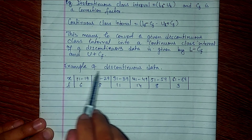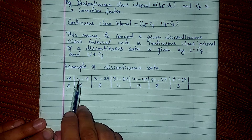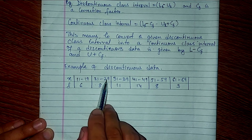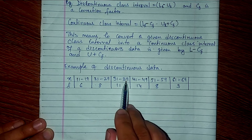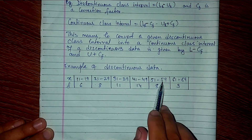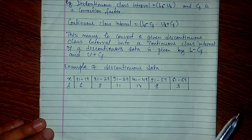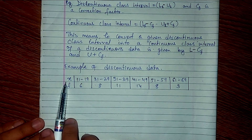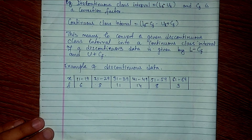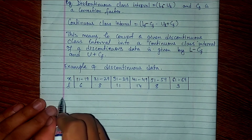Here is an example with discontinuous data: 11 to 19, 21 to 29, 31 to 39, 41 to 49, 51 to 59, 61 to 69. There are jumps between each class, so this is discontinuous data. We will convert this into continuous form using the correction factor.